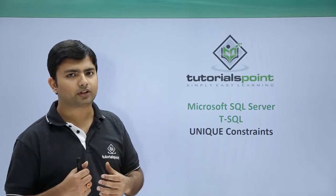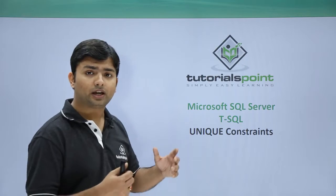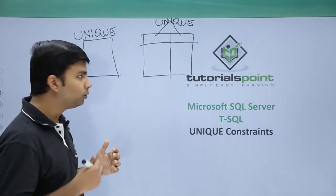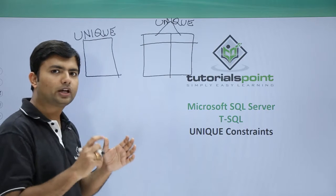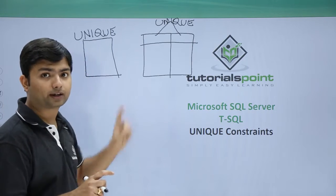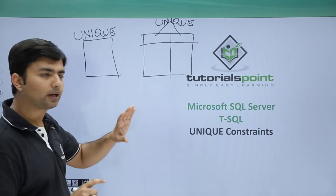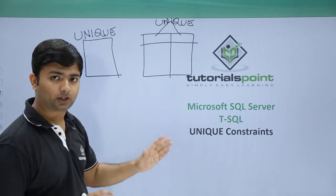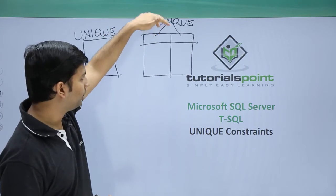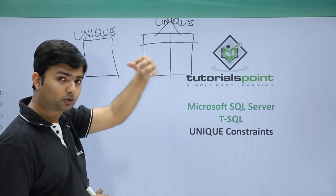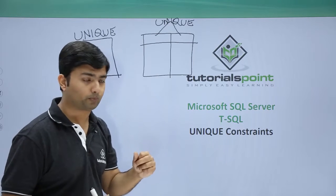Let's discuss the difference between implementing the unique constraint at the table level versus the column level. When you apply a constraint at the column level, you can only apply it on one column at a time. But at the table level, you can apply the same constraint on multiple columns in combination, as you can see here.